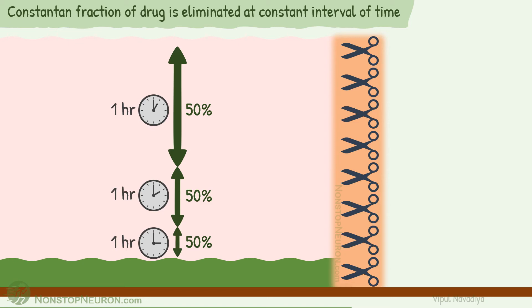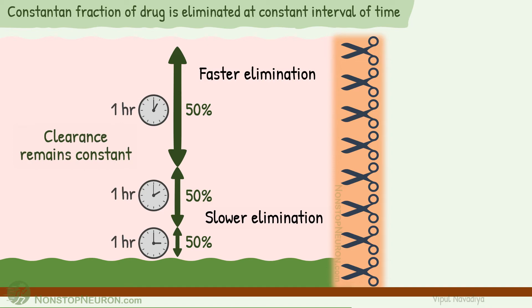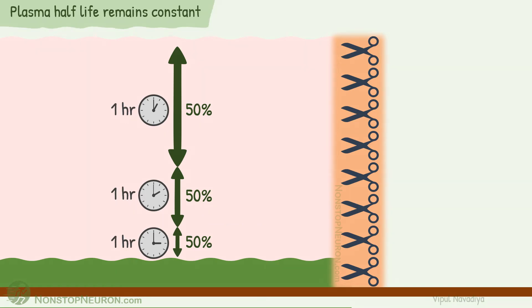The reason again is that same concept: at higher levels, drug is eliminated at a faster rate, and at lower levels it is eliminated at a slower rate — so the fraction of the drug eliminated remains constant. If you understand clearance, this also means clearance remains constant in first order elimination kinetics. This same example also explains our next point: plasma half-life remains constant. Plasma half-life is the time duration in which plasma concentration of drug falls by 50% of the earlier value. As we have seen, the first 50% fall took 1 hour, the next 50% fall also took 1 hour, and then the next 50% also took 1 hour. Thus, from any starting value of concentration, the time required for it to fall by half remains constant — in other words, plasma half-life remains constant.